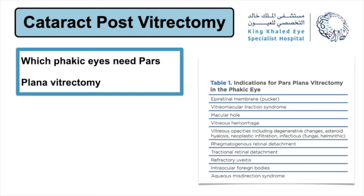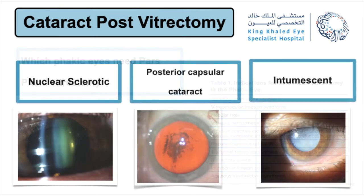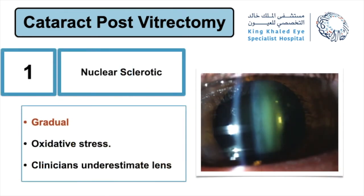Dr. Mohamed Al-Mutlag now discusses cataract post-vitrectomy. Which phakic eyes need pars plana vitrectomy? There are many indications. Cataract post-vitrectomy can be divided into three types: nuclear sclerosis — a more gradual form of cataract with oxidative stress, where clinicians tend to underestimate lens changes while it affects visual function; posterior capsular cataract — a more rapid form related to a mechanical component, either silicone oil, gas, or instrumentation, and the lens should be examined carefully for posterior capsule violation.